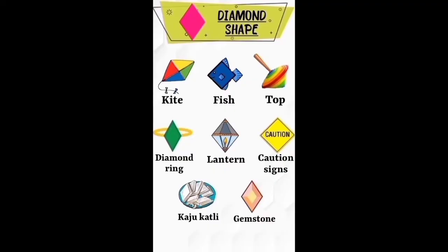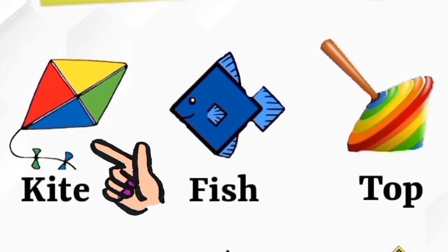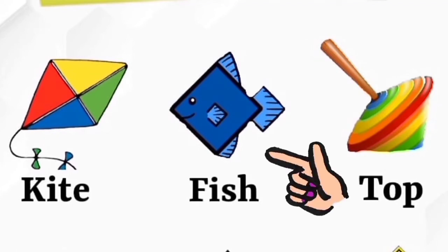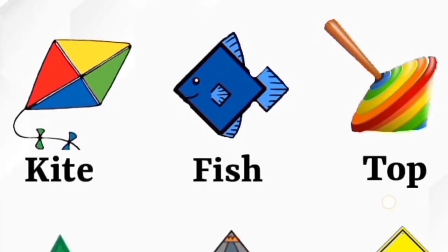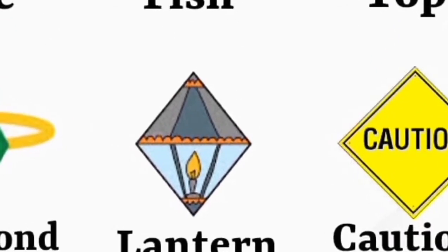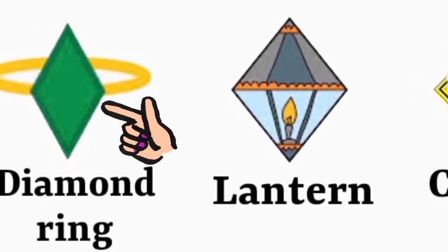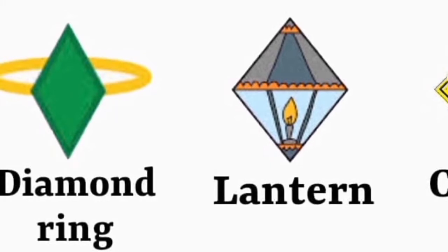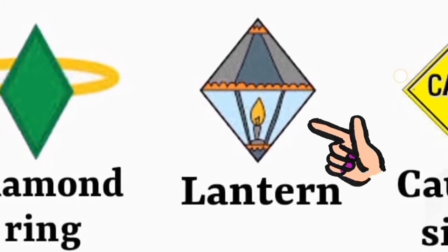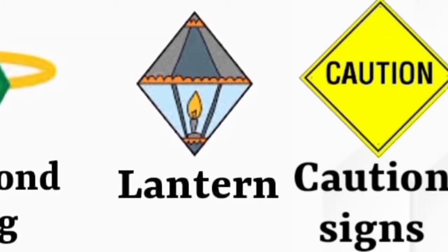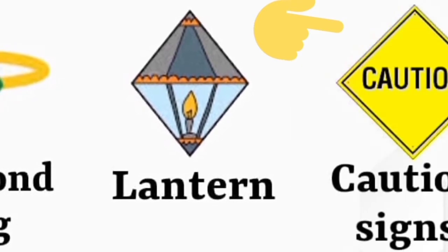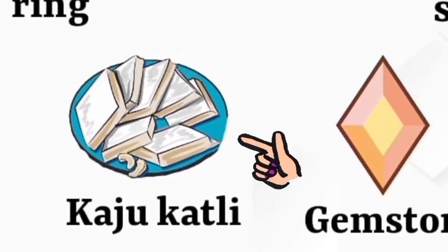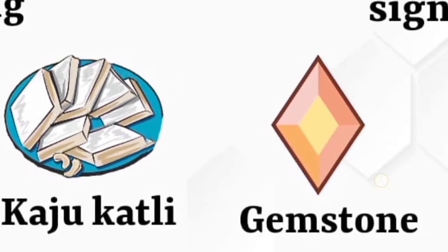Let's see some diamond shaped objects: kite, fish, top, diamond ring, lantern, caution sign, kaju kathli, gemstone.